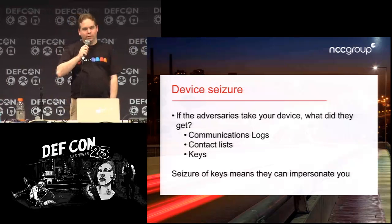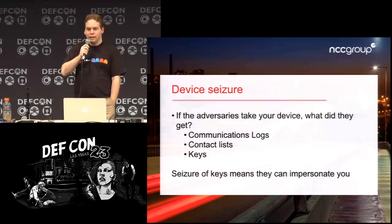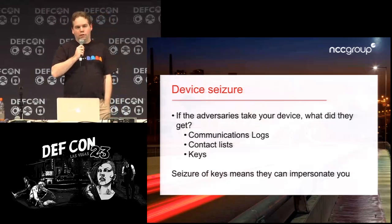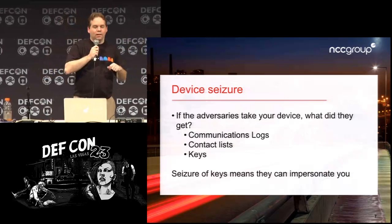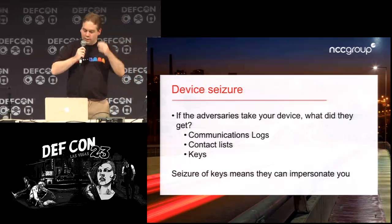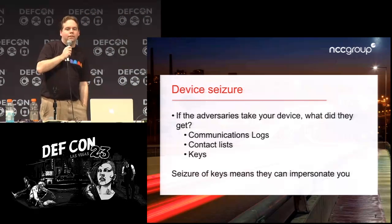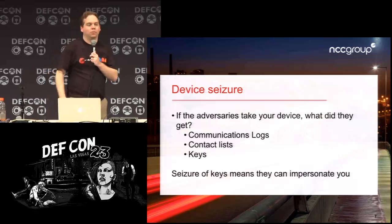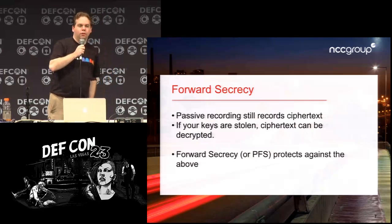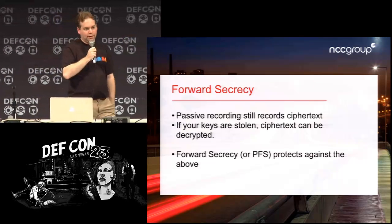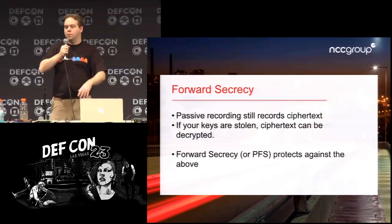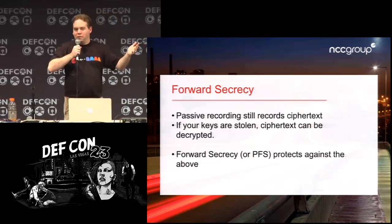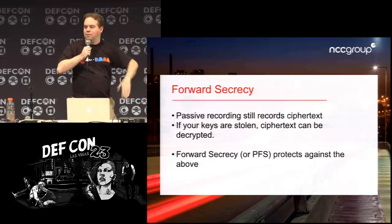We also need to talk about what happens when the device with your messaging app is seized by your adversary. If there were any logs — who you talked to, what you talked about — the adversary gets all of it. They get your contact list and can build metadata. They also likely get your keys, meaning they can impersonate you to all your friends. There's another wrinkle: a passive attacker can't read encrypted data, but they can record it. Later, once they find out who you are and take your phone, they might be able to use the keys they just seized to decrypt all the encrypted data they've been storing.